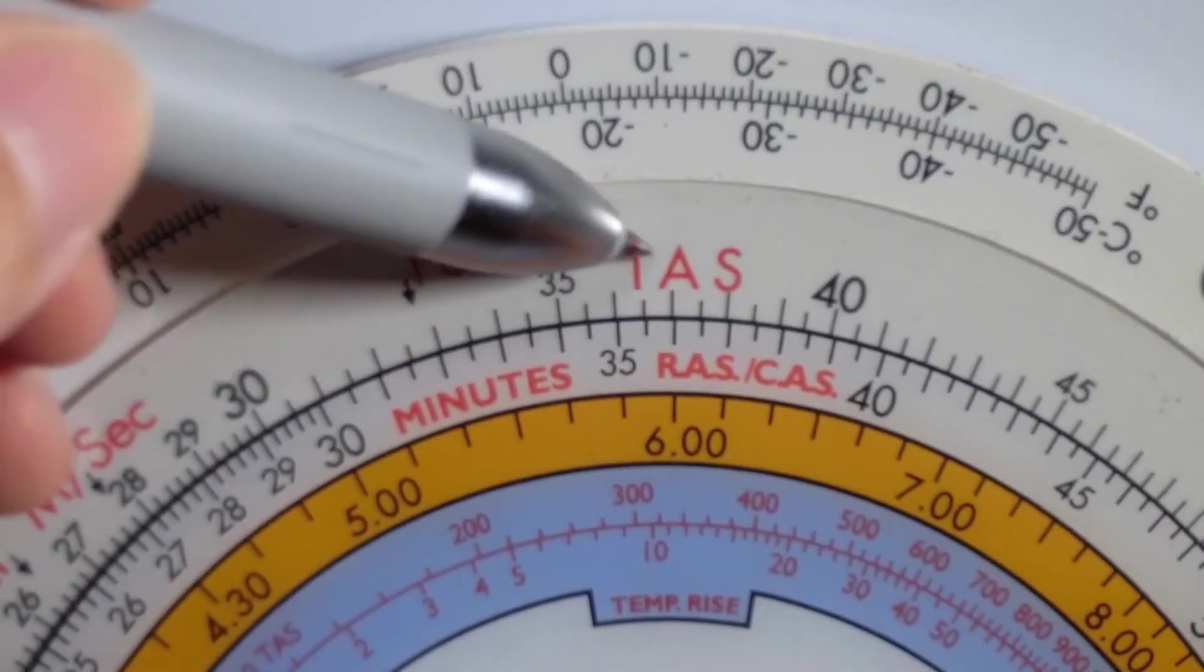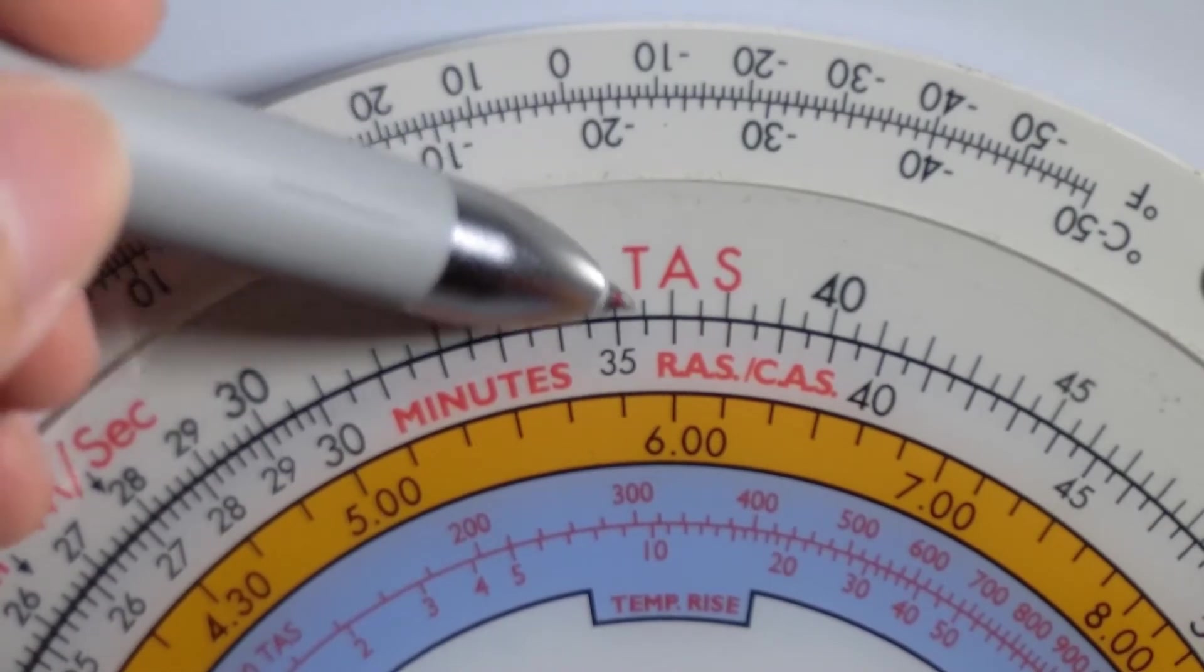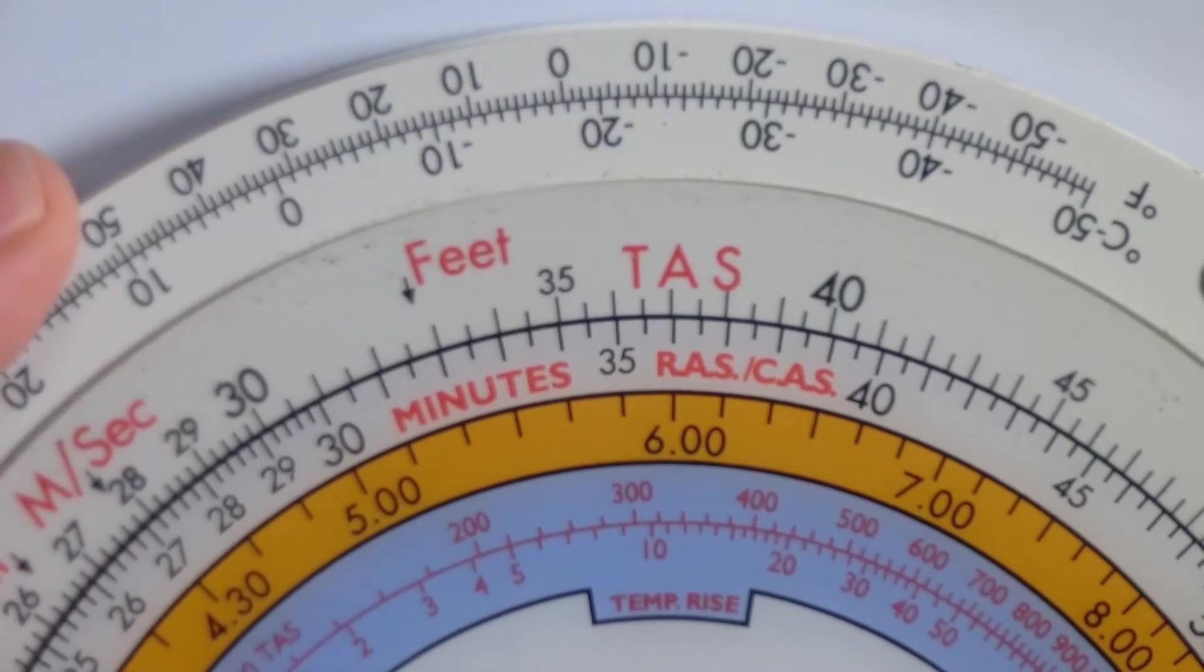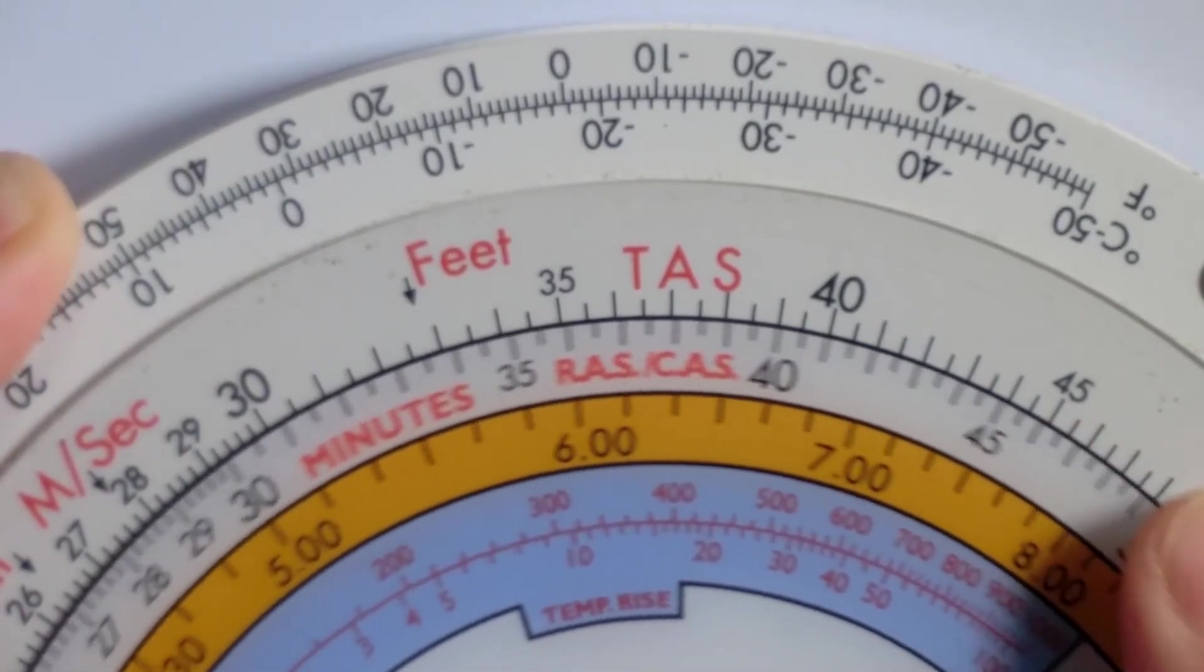The outer scale is where we read true airspeed and the inner scale is where we read the rectified or calibrated airspeed. And you can see that the inner scale actually turns.